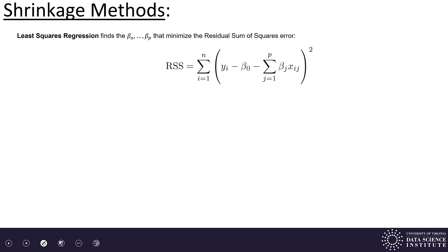Let's start with regular least squares regression as a review. In least squares regression, we find the coefficients beta-naught through beta-p that minimize the residual sum of squares error. Here is that familiar formula for residual sum of squares error.